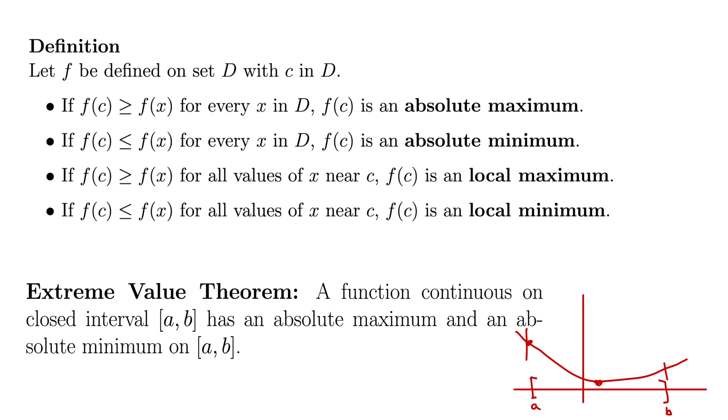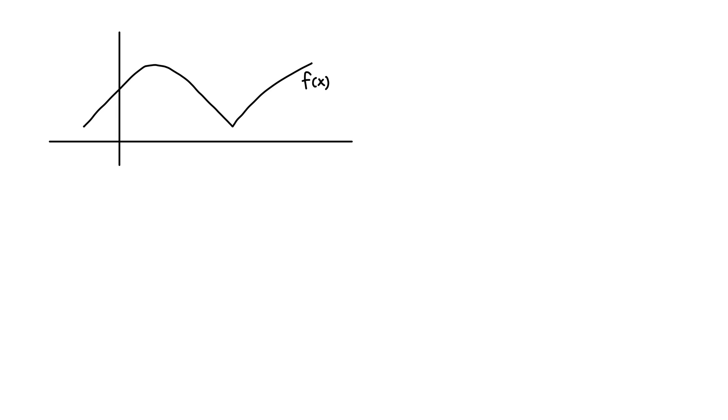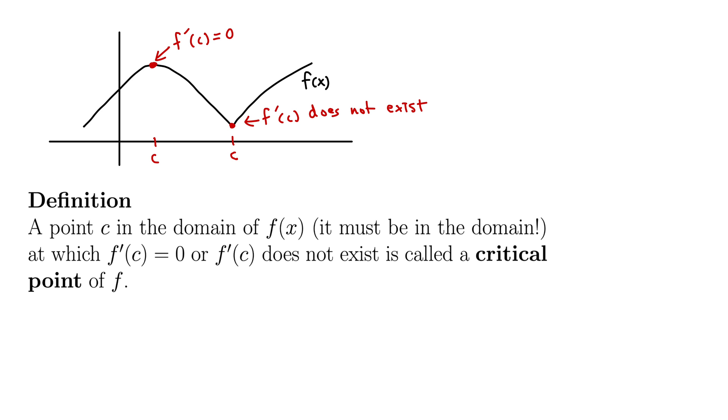Okay, we need one more definition to really be set up for this section. If you recall from before, we said that a function could have these local maxima and minima, or maximum points and minimum points, where the derivative was either equal to zero or does not exist. Okay, well, we call these c values down here on the x-axis critical points. So, it's good that we chose c for them. Critical points down on the x-axis are these points for which the function has a derivative of zero or a function that does not exist. So, here's the full definition. A point c in the domain of f of x, and I note here that it must be in the domain. That's going to be an important thing to check. Okay, at which f prime of c equals zero or f prime of c does not exist, is called a critical point of f.